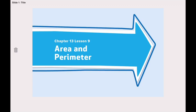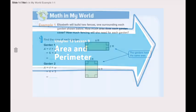Remember, we said this before — we can have two rectangles that have the same area but different perimeters.